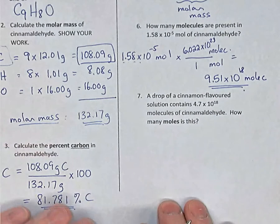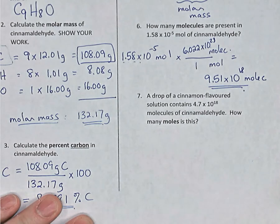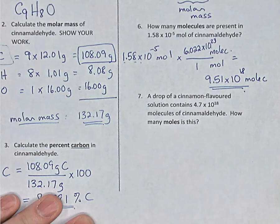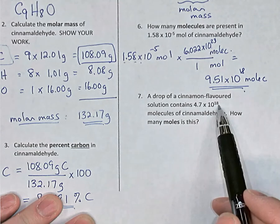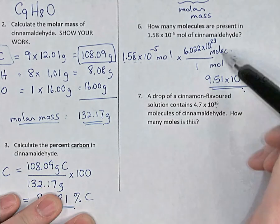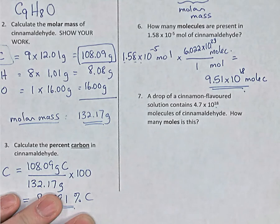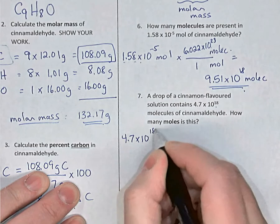The last question: a drop of cinnamon-flavored solution has 4.7 times 10 to the 18 molecules. How many moles is that? Quick mental math: one mole is Avogadro's number, about 6 times 10 to the 23. Since 10 to the 18 is much smaller than 10 to the 23 — the difference is 10 to the 5 — we'd expect roughly 10 to the negative 5 moles. So we set up: 4.7 times 10 to the 18 molecules.